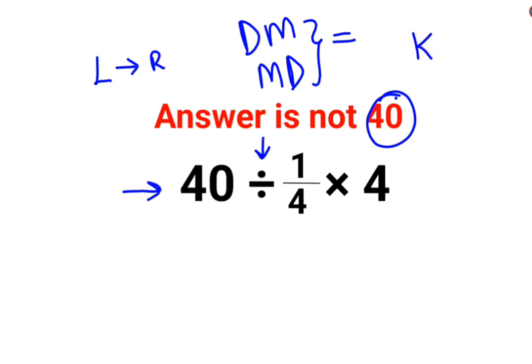Wherever you have division, you will have to follow the rule of KCF, where K stands for keeping the first number as it is, C stands for changing the division sign to multiplication, and F stands for flipping or taking reciprocal of 1/4, which is just 4. So we get 40 multiplied by 4 multiplied by 4.